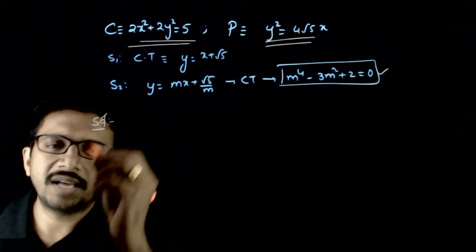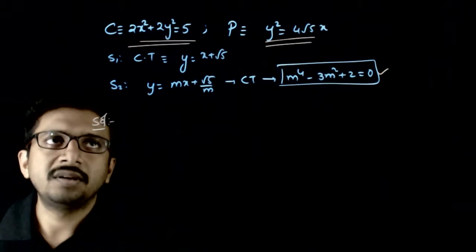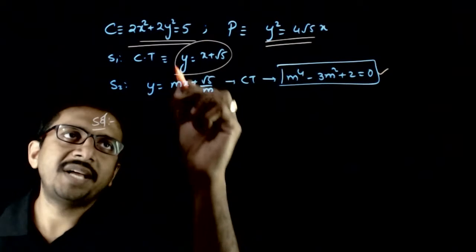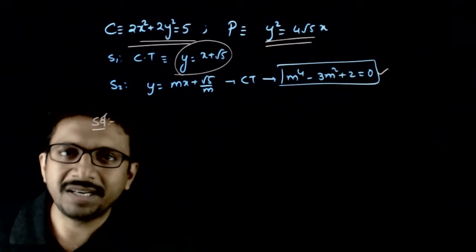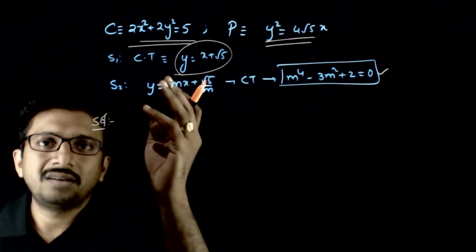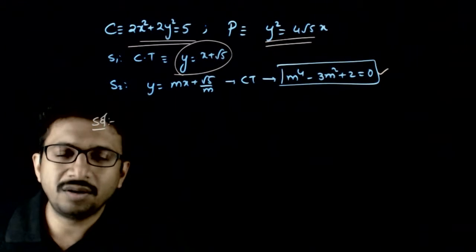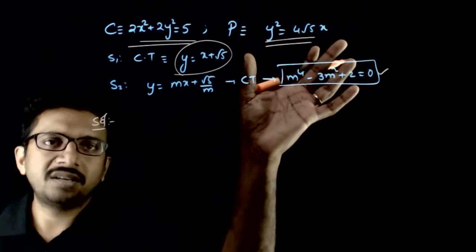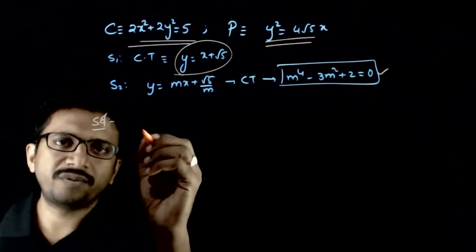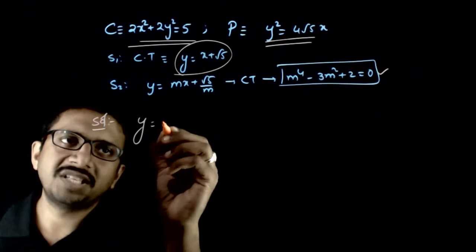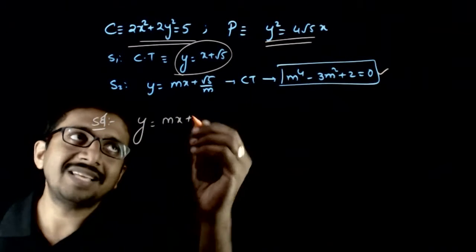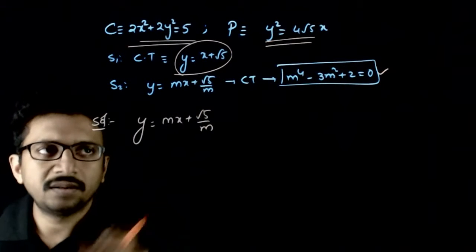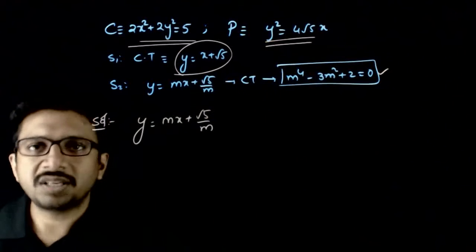Let us analyze these one by one. In statement 1, we have to check whether y = x + √5 is a common tangent. To find a common tangent to these two curves, we take y² = 4√5·x, and the equation of a general tangent to this parabola is y = mx + a/m, that is mx + √5/m.